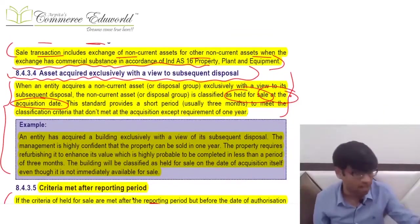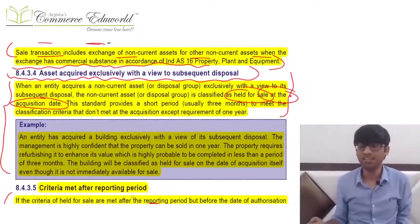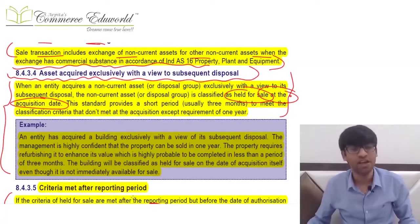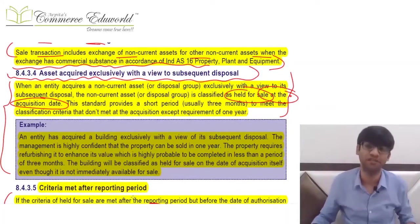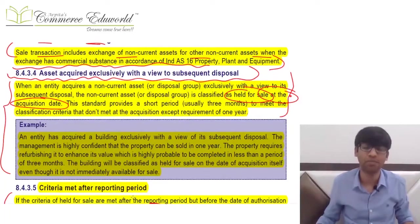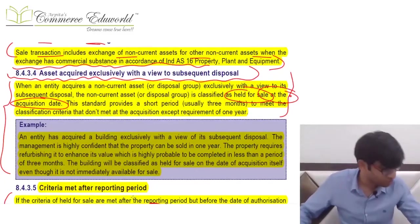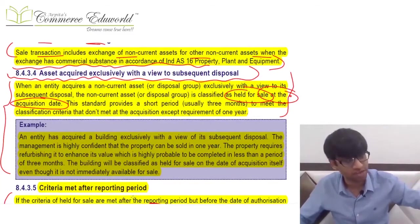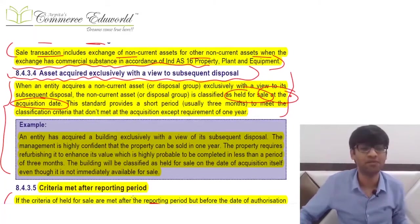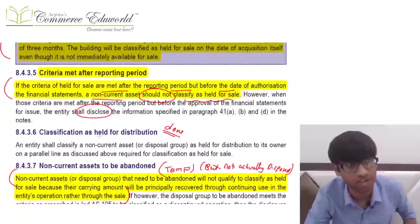If an asset is acquired only with a view of subsequent disposal within one year from the date of acquisition, then from the date of acquisition only, that asset is considered held for sale. In such a scenario, a short period of three months is given to make the asset ready for sale and meet classification criteria. However, the one-year period will always be counted from the date of acquisition. If an asset's held-for-sale conditions are fulfilled after the balance sheet date but before approval, that is a non-adjusting event — do nothing except possibly give a disclosure if material.